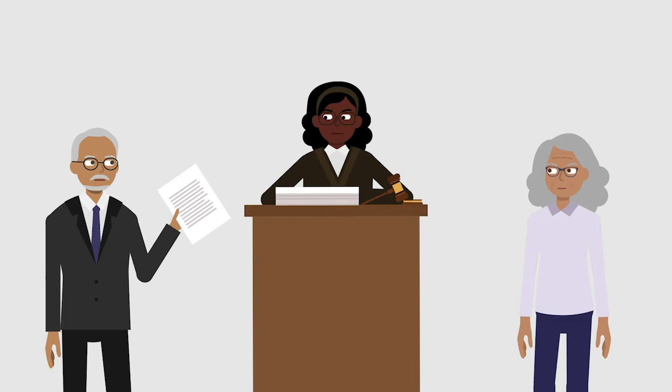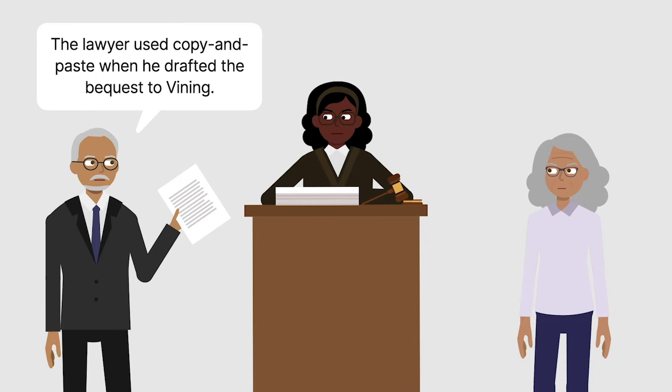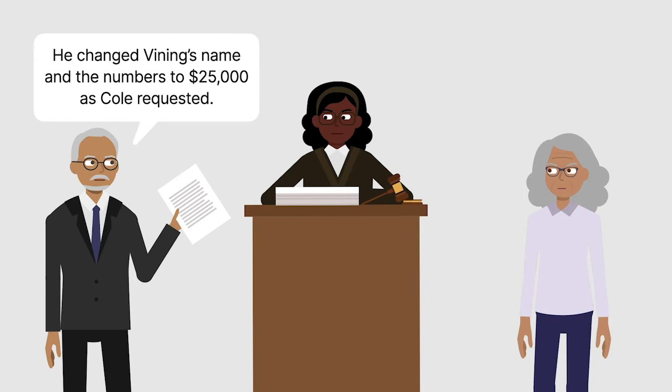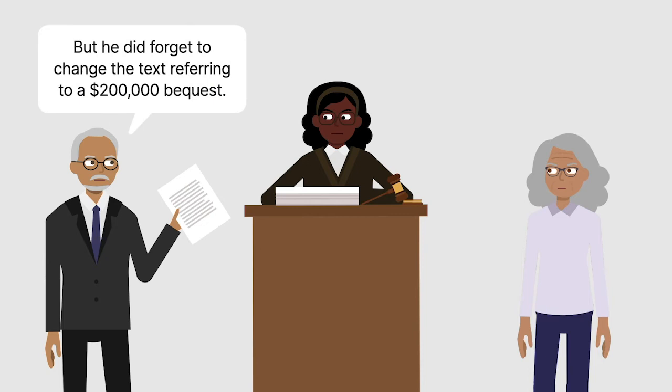Black explained that he used the copy and paste function on his computer when he drafted the bequest to Vining. Black replaced Vining's name and changed the numbers in the bequest to $25,000, as Cole had requested. He forgot, however, to change the text that referred to a $200,000 bequest.